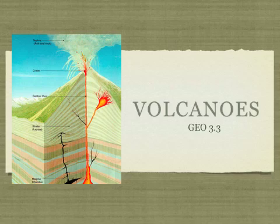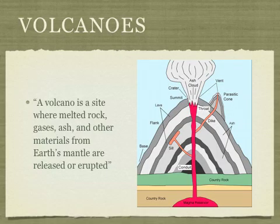Now we're moving into volcanoes. The image on the left is a great representation of what a volcano looks like on the inside. Down below we have the magma chamber, where magma builds up pressure and finally goes up through the central vent — the central channel that goes from the magma chamber to the crater, to the mouth of the volcano. There are also smaller channels that veer off to the left and right, which may never surface but still form within the rock layers. A volcano is any site where melted rock, gases, ash, and other materials from Earth's mantle are released or erupted.